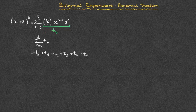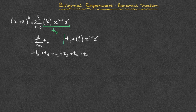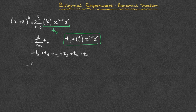I'll just write it on the side here. The general term t(r) is equal to the binomial coefficient 5r times x to the power of 5 minus r times 2 raised to the power of r. For t0, the first term, we replace every r by 0. In other words, this is equal to the binomial coefficient (5,0) times x to the power of 5 minus 0 times 2 raised to the power of 0.